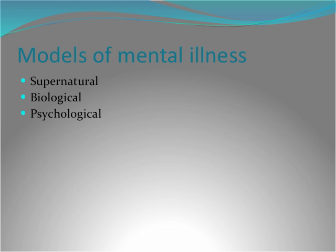The first thing we want to do is take a look at these three categories listed on this slide: supernatural, biological, and psychological — because those are what I call the three models of mental illness. A model is a theory or explanation for how or why some phenomenon occurs. Throughout the course of human history, each of these three levels of explanation have been proposed as to why abnormal behavior occurs.